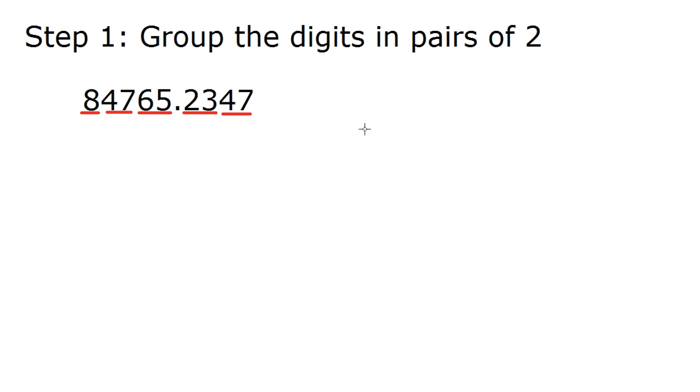One way you wouldn't want to do it would look like this. So here, if you started grouping from the front forwards, you would end up with this 5 by itself, and that's not okay. So this would be wrong. It's important that you group from the decimal outwards, so that your groups are correct.